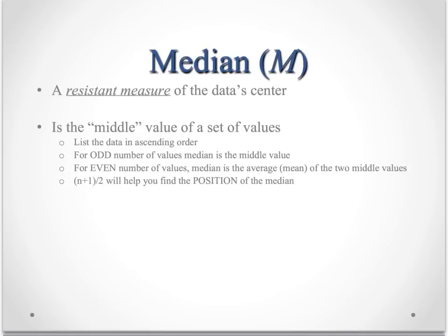It would change the mean significantly. Like on those test scores, instead of the lowest test score being 65, if it were a 0, you all know that that would drag that mean down a lot lower. But it wouldn't have changed the median at all.